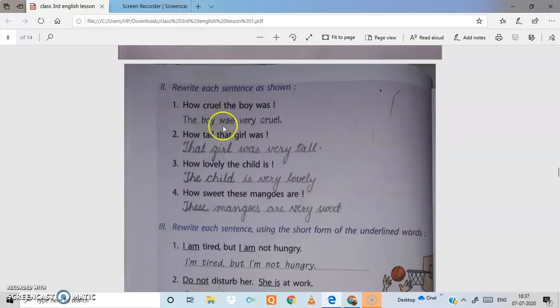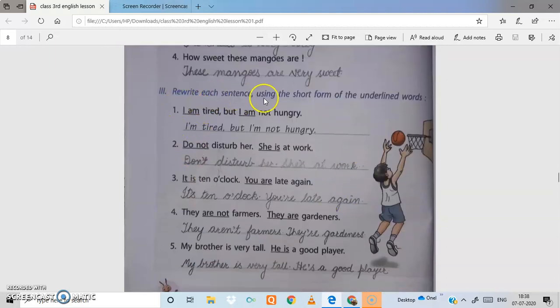Next, rewrite the sentences as shown. How cruel the boy was - the boy was very cruel. How tall that girl was - the girl was very tall. How lovely the child is - the child is very lovely. How sweet these mangoes are - these mangoes are very sweet.